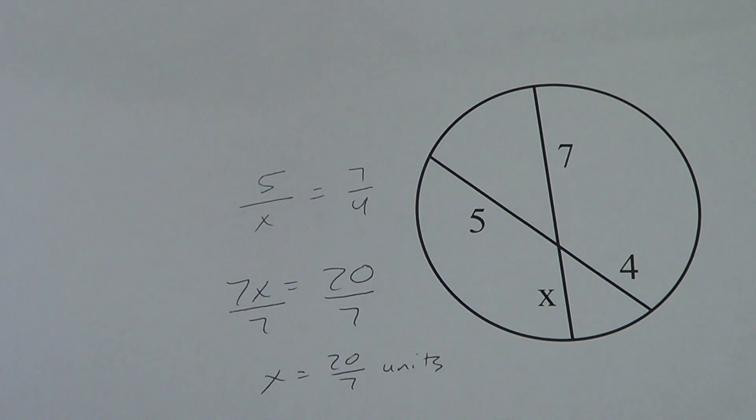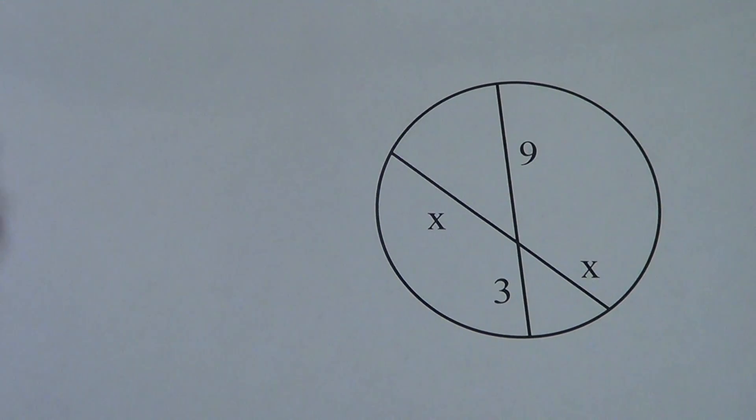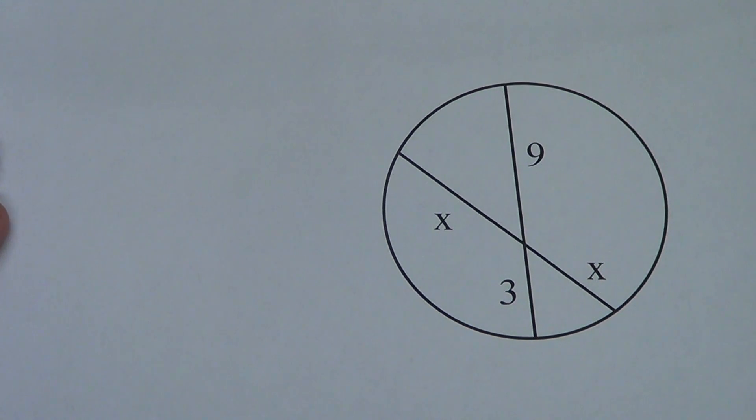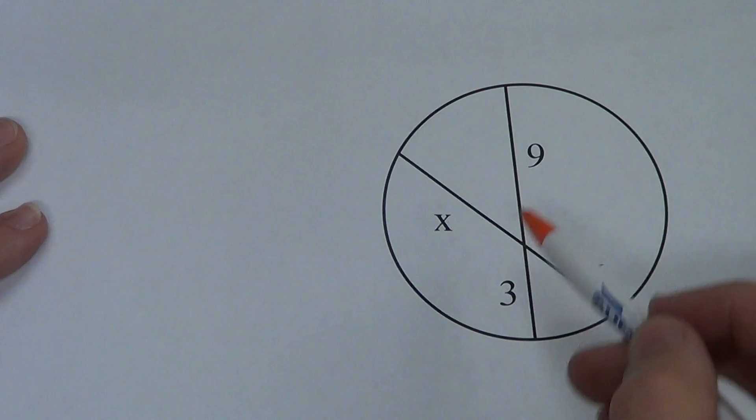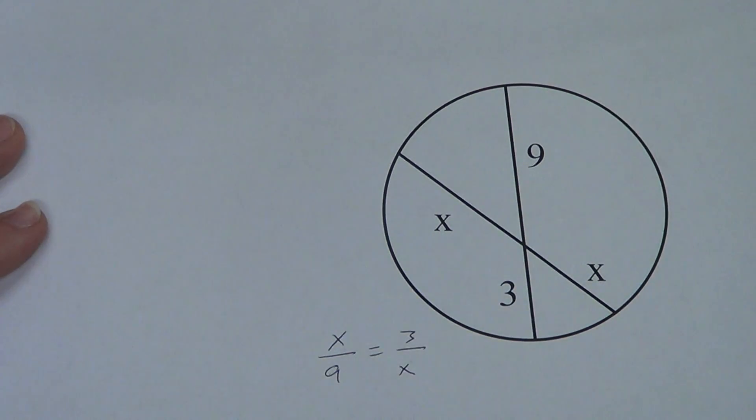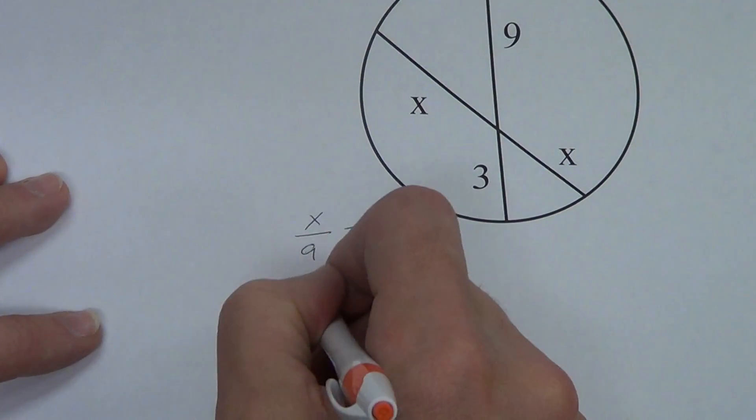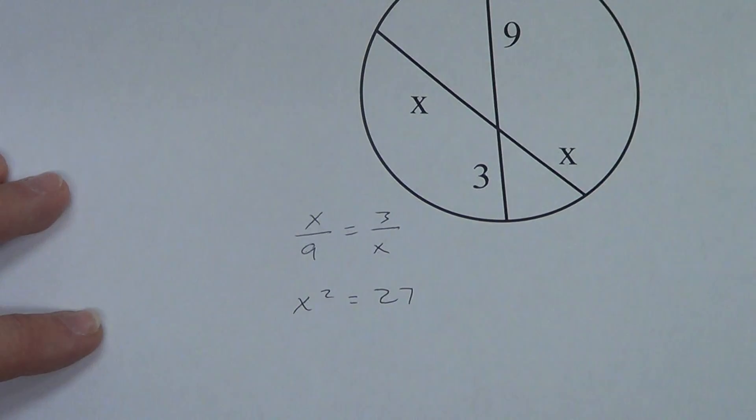That was a really easy one. Let's take a look at another one. This one, once again, pause, attempt it on your own because some of you are going to make a careless mistake on this one. This time I'm going to set up a little bit here, but I'm going to work this direction. So x over 9 equals 3 over x. Cross multiply. x times x is not 2x. x times x is x squared. We get 27.